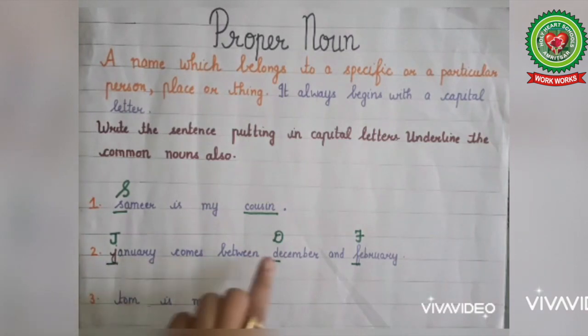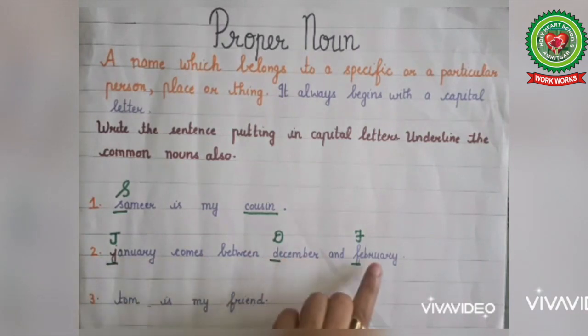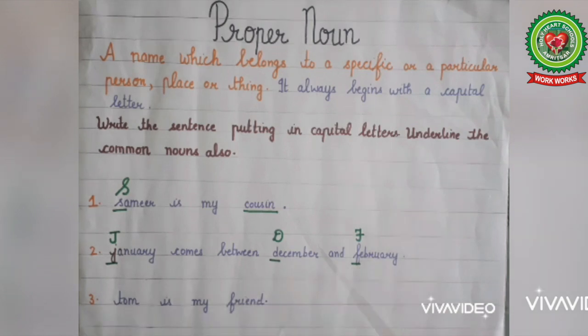January, December, and February are proper nouns — they are names of particular months — so we write these months with capital letters.